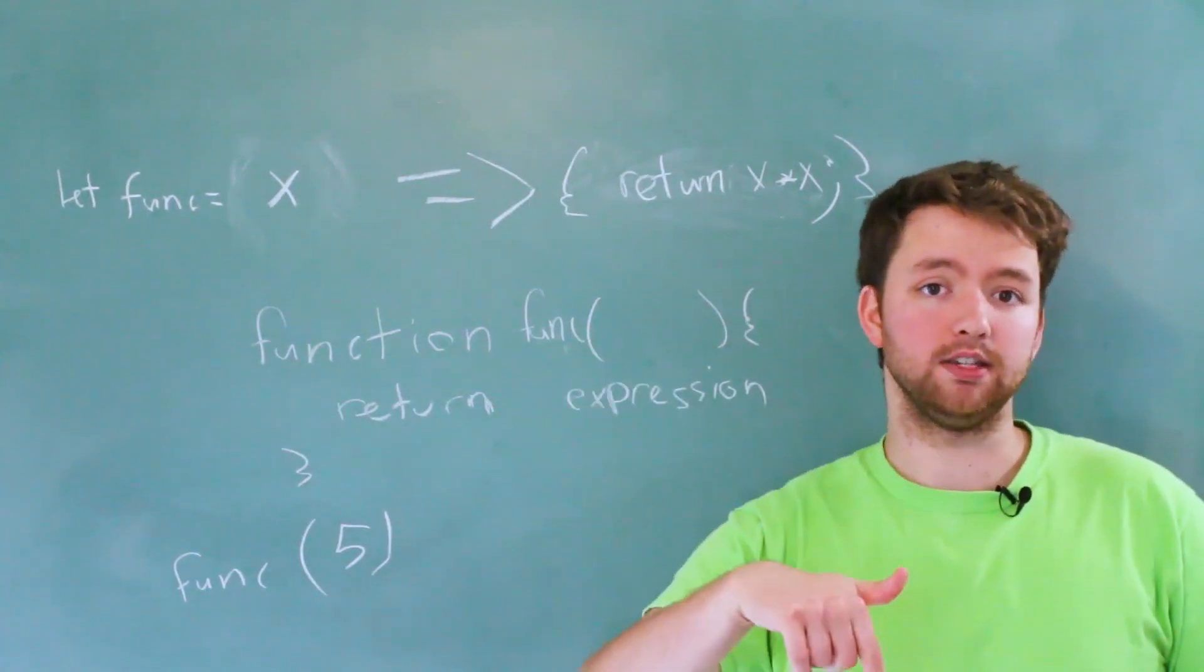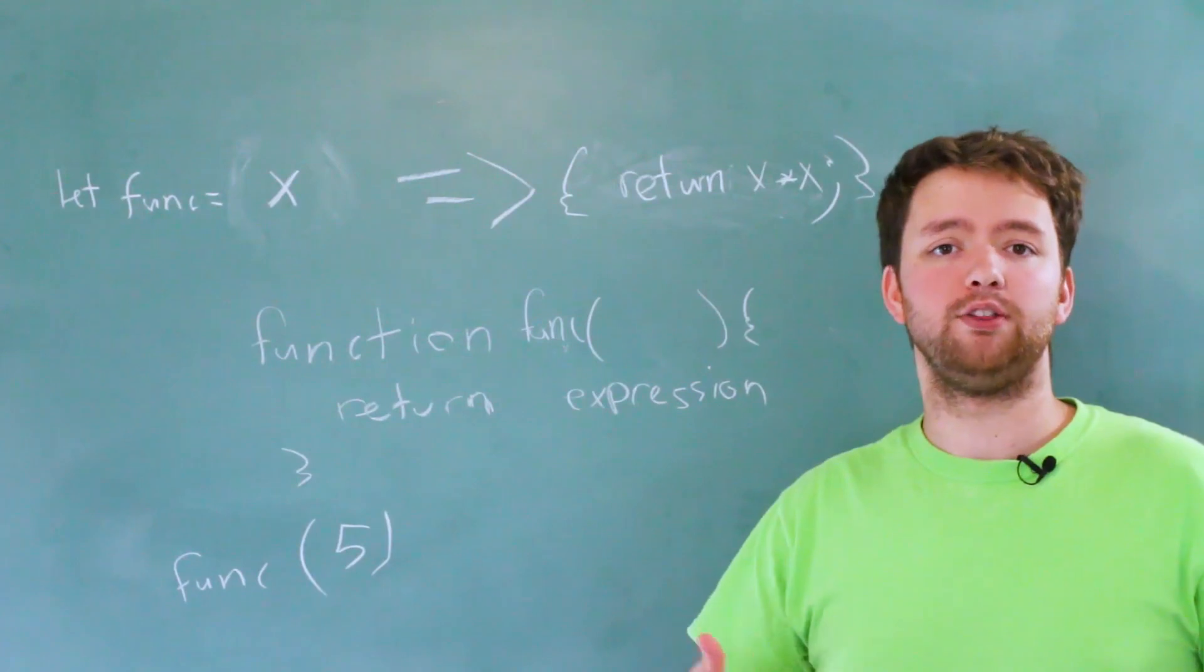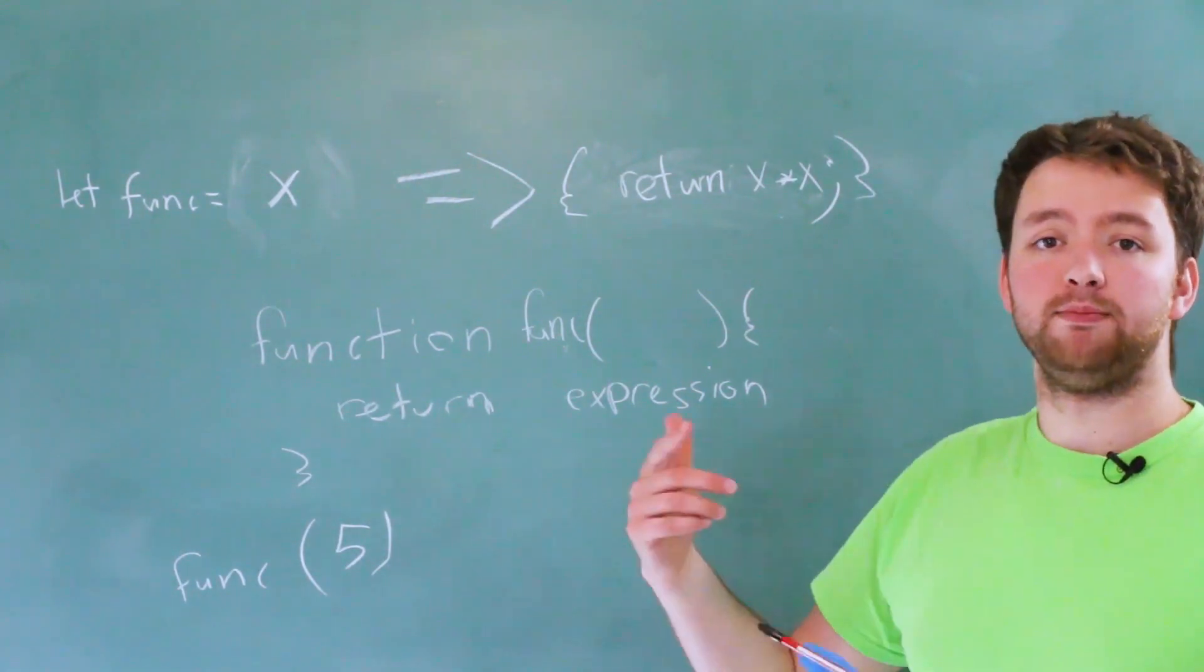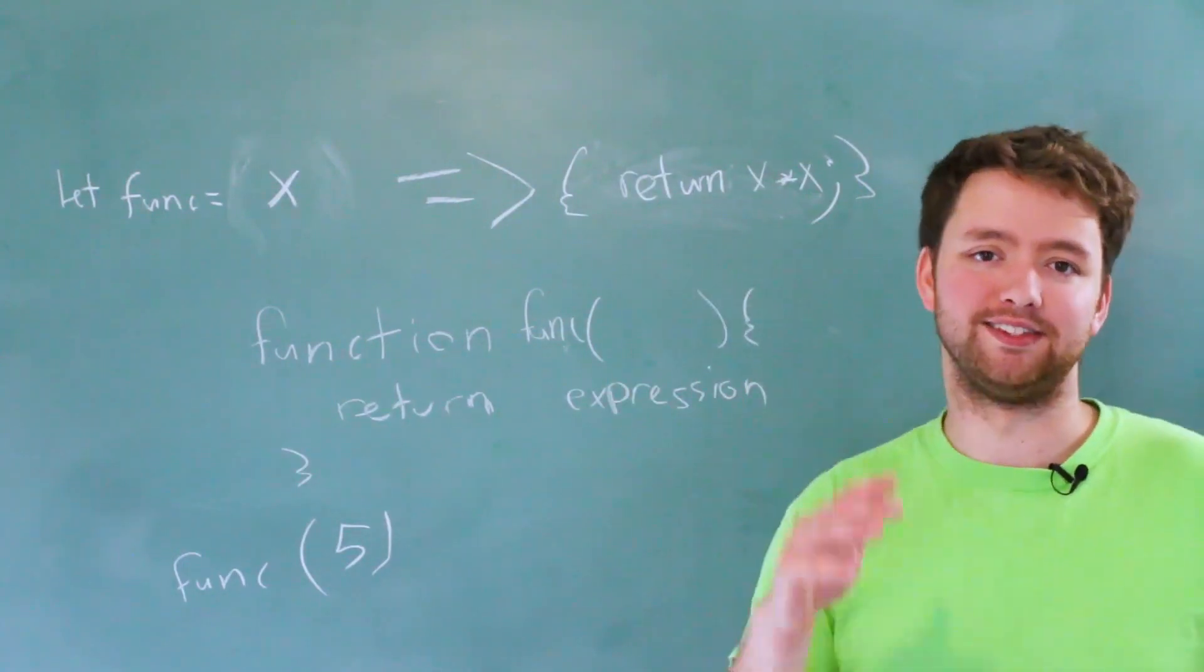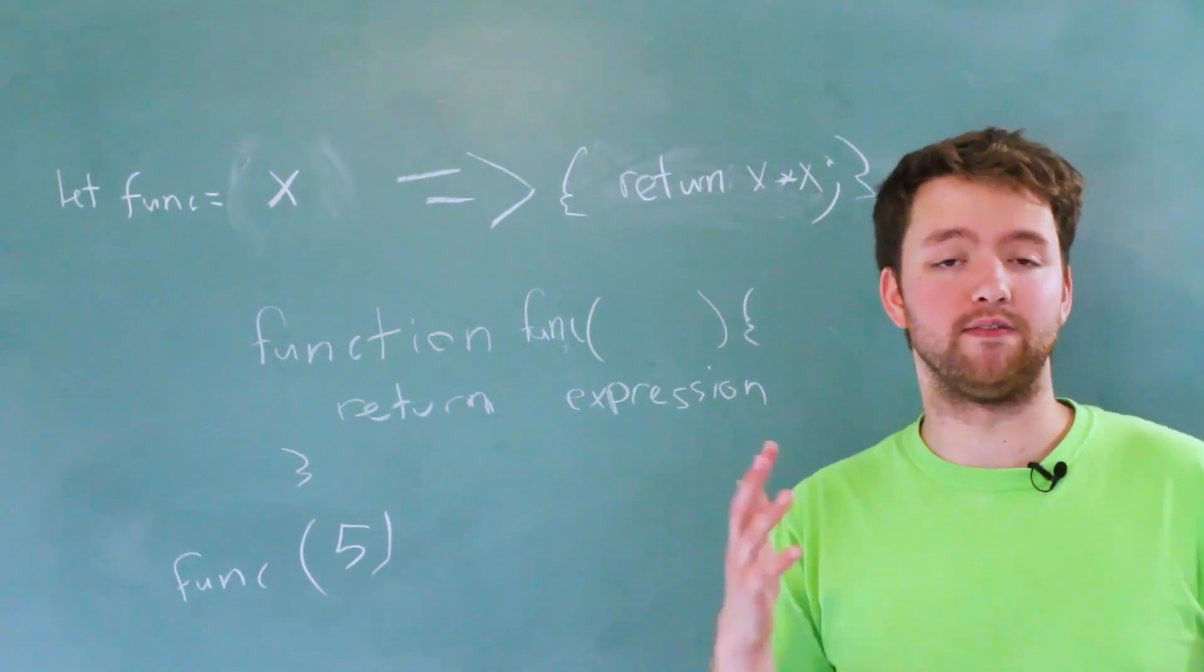So back in my in-person video about 'this,' I was complaining how with normal functions they're a little bit unpredictable because 'this' can change. Well, arrow functions fixes that problem because the value of 'this' is always going to be the same. There's a couple of things you got to be careful of with that and make sure you get the right value of 'this,' but we're going to be talking about all of that.